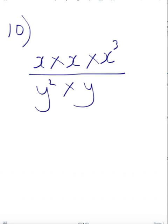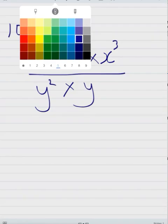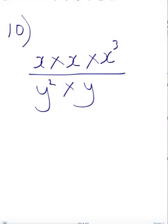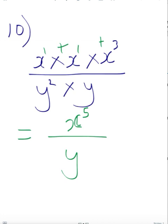We can also apply the first index law to expressions in fraction form. Simply simplify the top and simplify the bottom separately. For the numerator: x¹ × x¹ × x³ — add powers: 1 + 1 + 3 = 5, giving x⁵. For the denominator: y with an invisible power of 1, plus y² — so 1 + 2 = 3, giving y³. Result: x⁵ over y³. Further simplification will come when we learn the negative index law.